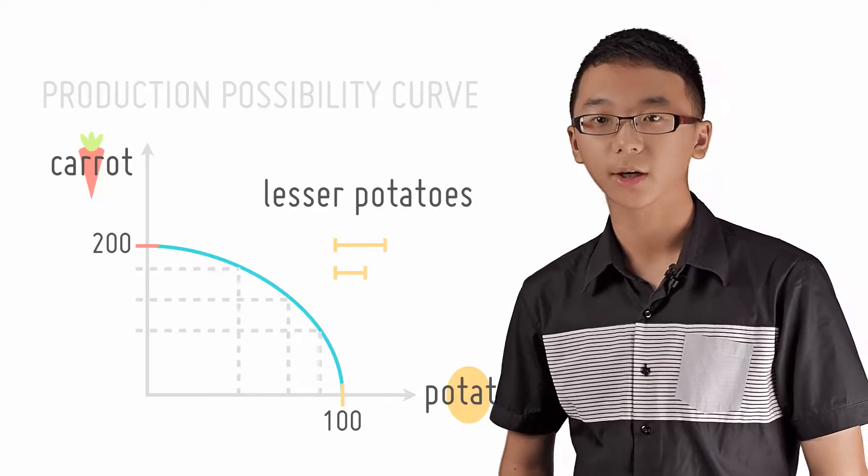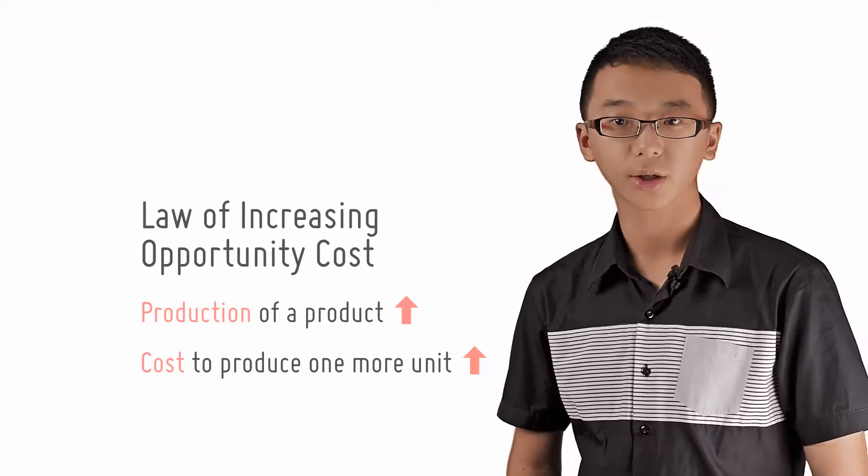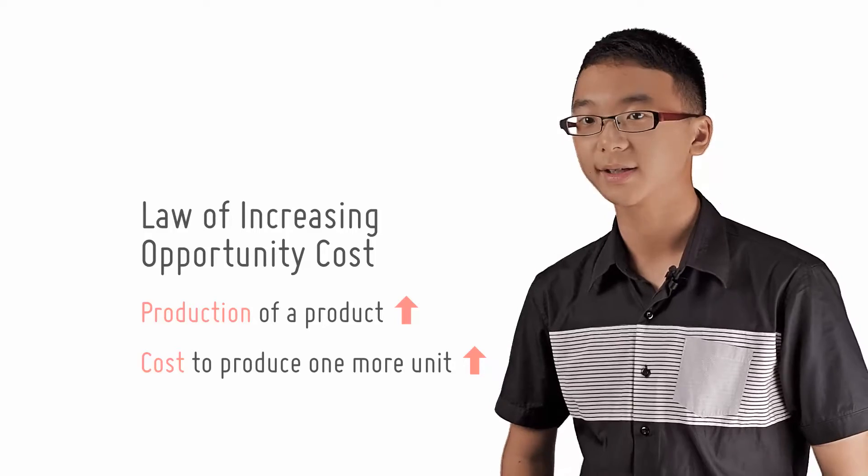The law of increasing opportunity cost states that as production of a product increases, the cost to produce an additional unit of that product increases as well. And why is this so?